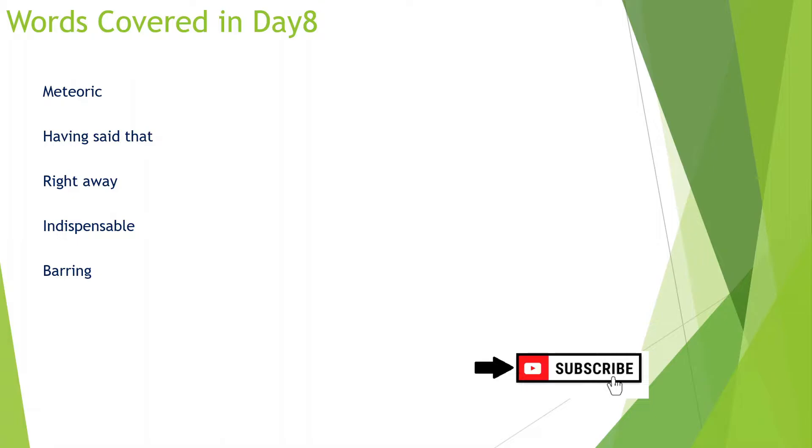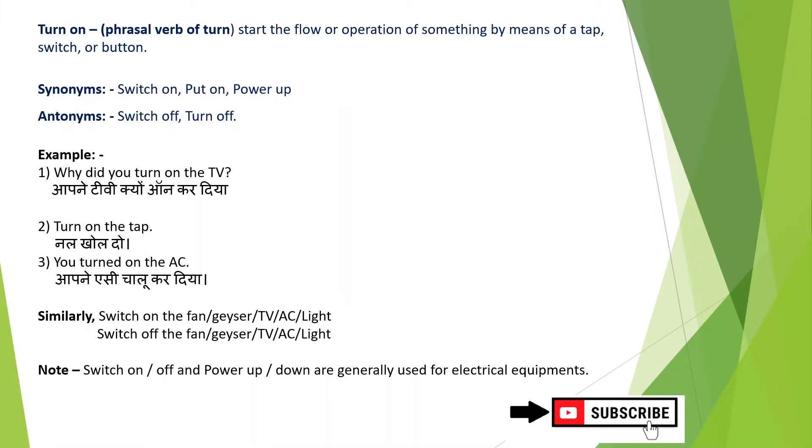Now, the first word of today is turn on. This is a phrasal verb. It means to start the flow or operation of something by means of a tap, switch, or button. Synonyms are switch on, put on, power up. Antonym is switch off, turn off.